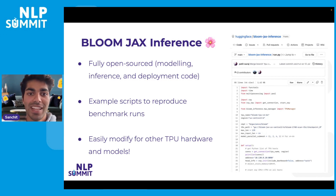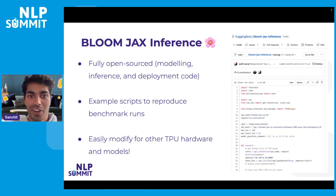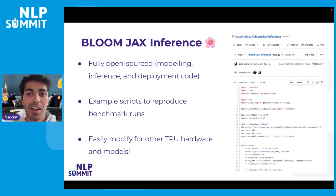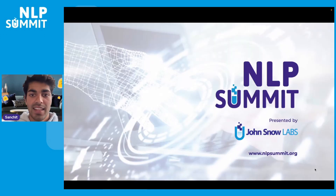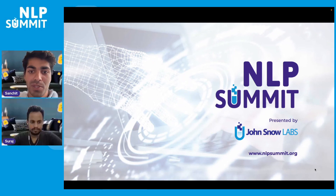We want to limit the number of people who have to go through this process again, so in Hugging Face style, we fully open-sourced all our code — the modeling code, the inference code, and the deployment code. We hope this helps the community and anyone who wishes to launch large language models in the future. We have example scripts to reproduce our benchmark runs, and the scripts are easily modifiable for any other TPU hardware and models. Thank you very much for listening to our talk on the deployment of BLOOM.